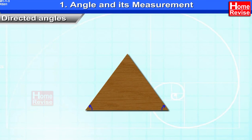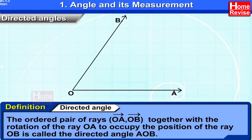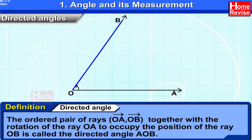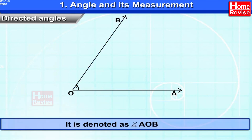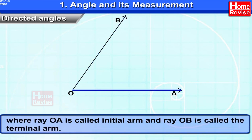Having understood this, let us look at the mathematical definition. The ordered pair of rays OA and OB, together with the rotation of ray OA to occupy the position of ray OB, is called the directed angle AOB. The amount of rotation of the initial ray gives the measure of the directed angle. It is denoted as directed angle AOB, where ray OA is called the initial arm and ray OB is called the terminal arm.